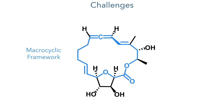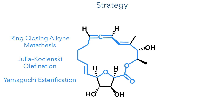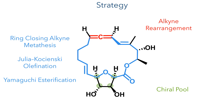This structure includes a 17-membered macrocyclic ring which possesses an endocyclic chiral alene. Also embedded in this macrocyclic ring is a tetrahydrofuran moiety containing four contiguous chiral centres. To construct this macrocyclic framework, they would use three key reactions: a ring-closing alkyne metathesis, a Julia-Kocienski olefination, and a Yamaguchi esterification. The chiral alene could be generated from an alkyne rearrangement, while the chirality in the furan moiety would be derived from the chiral pool.